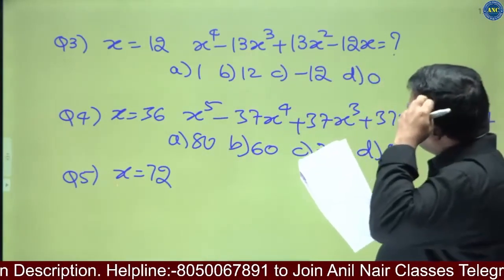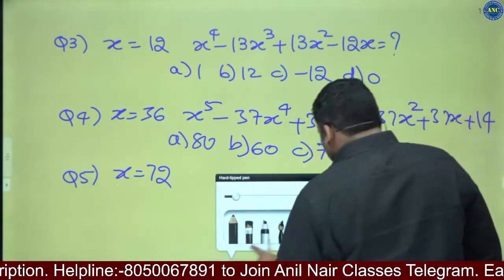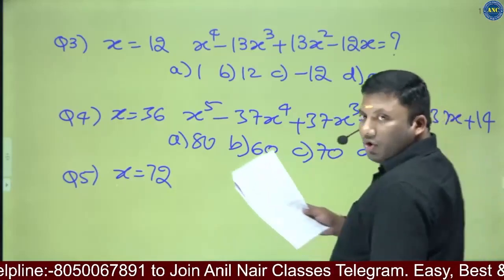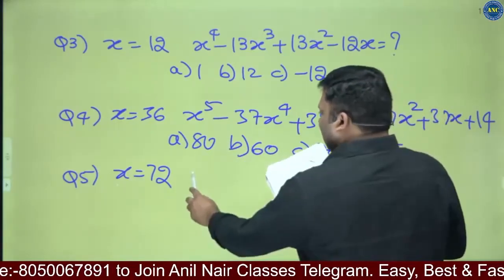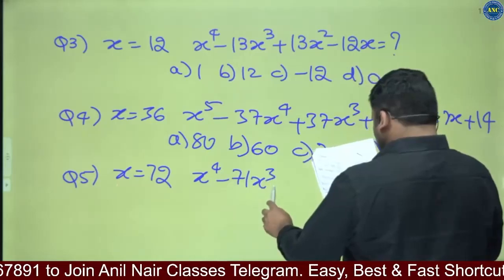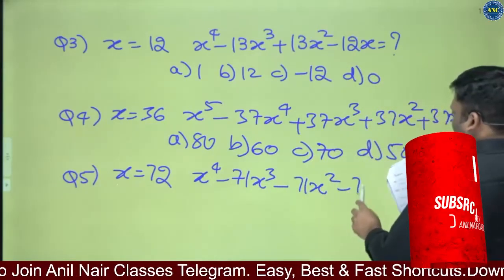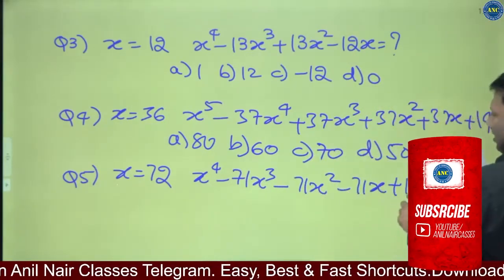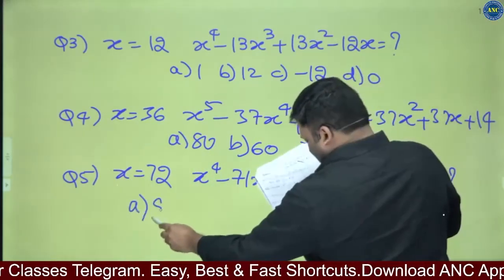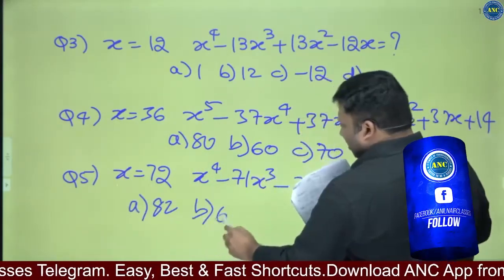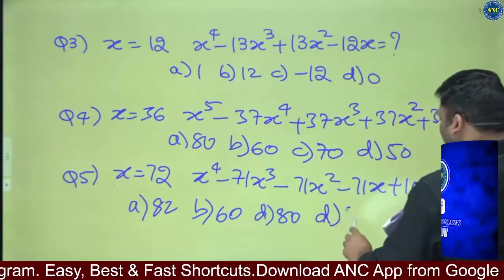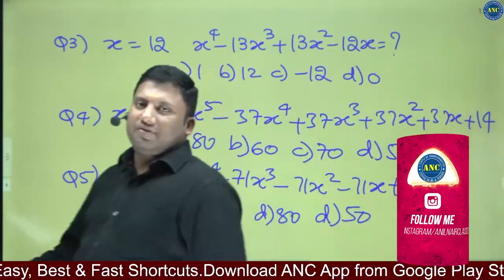In fact we can also do a 3, 4, 5 or 1 logic. See here. Question number 5: x is 72. The expression is x power 4 minus 71x cube minus 71x square minus 71x plus 10. Options: 82, 60, 80, and 50. So it can be 82 and 50.